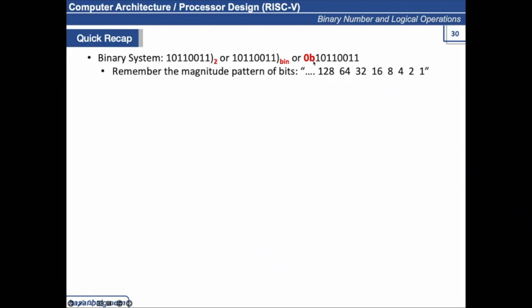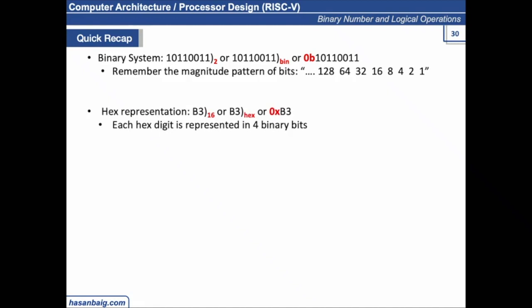This is another way of representing a binary number with 0B or simply B. Always remember the magnitude pattern — the increasing power of 2 from right to left — it will help you easily convert a number from binary to decimal or any other system.